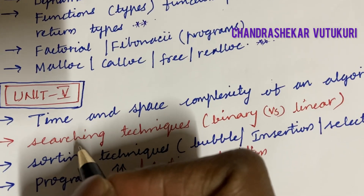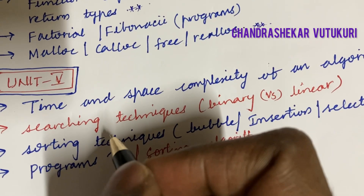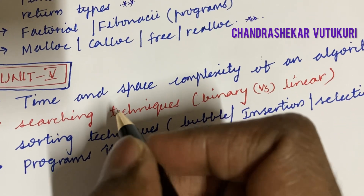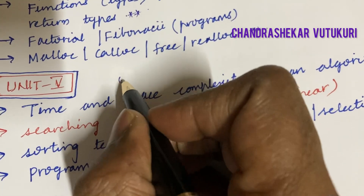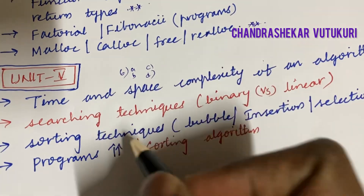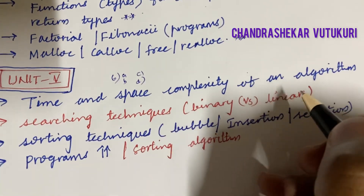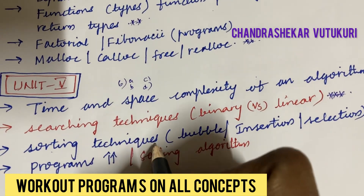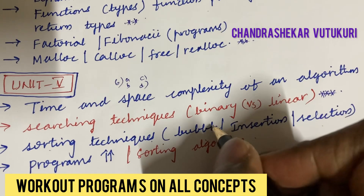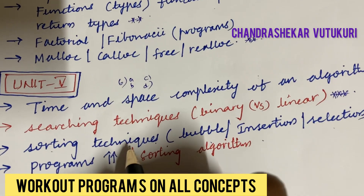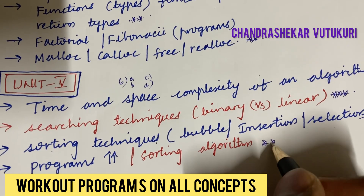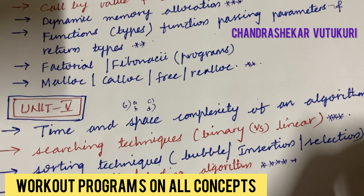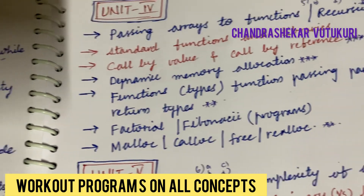Dear students, you have enough time to work out all the concepts. Please concentrate and aim to score better — 30, 40, or 50 percent won't give you anything by the end of your final year. For Unit 5, the time and space complexity of an algorithm, and searching techniques — binary and linear — are top short questions. Sorting techniques like bubble, insertion, and selection sort, their differences, related programs, and algorithms may appear as short as well as long questions.